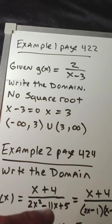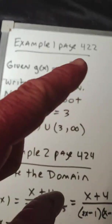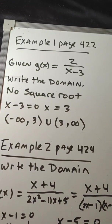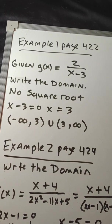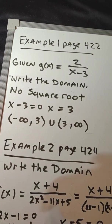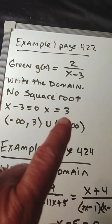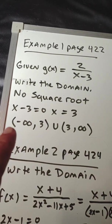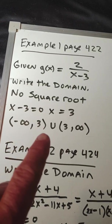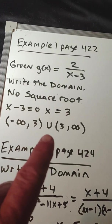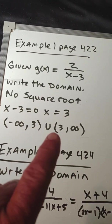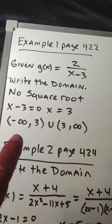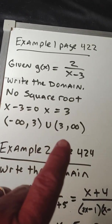So our domain for this particular rational expression — and remember, a rational expression is just another name for fractions with variables — is all real numbers except for 3. In interval notation, we go from negative infinity to 3 with a parenthesis, union, then from 3 with a parenthesis to positive infinity. This tells us it's all real numbers except for 3.